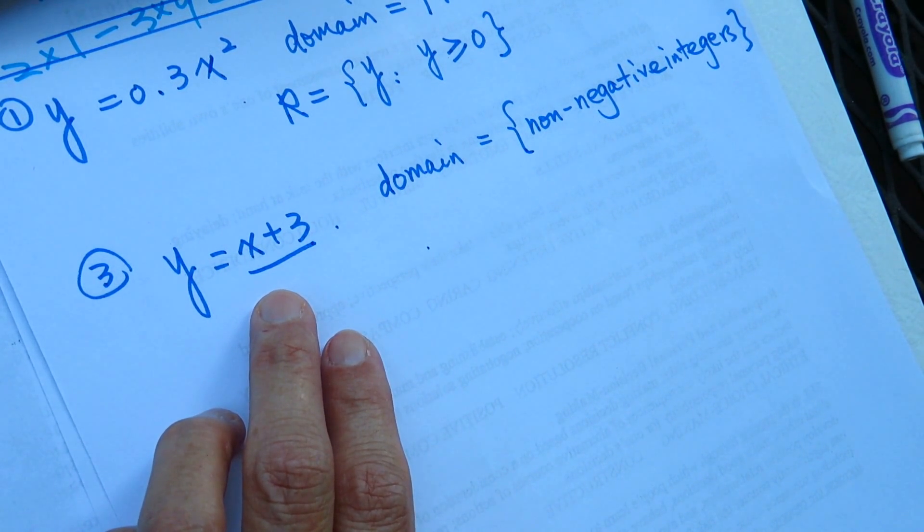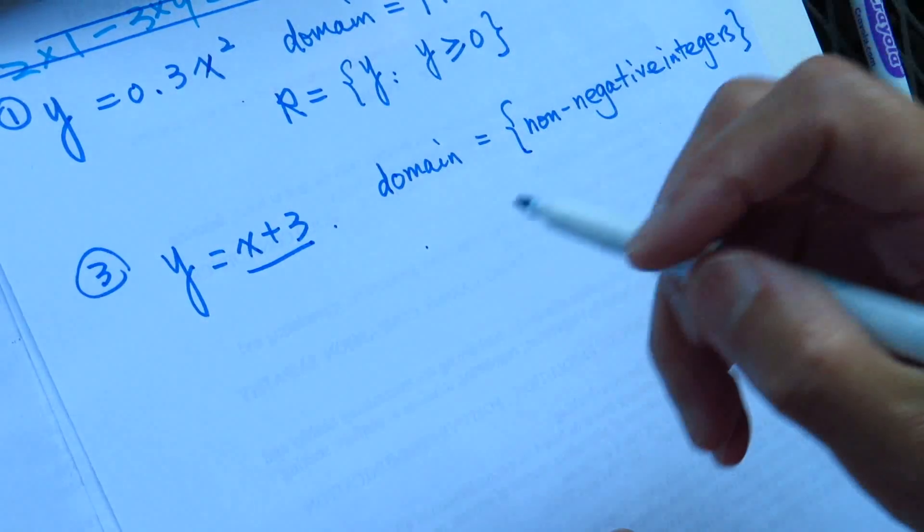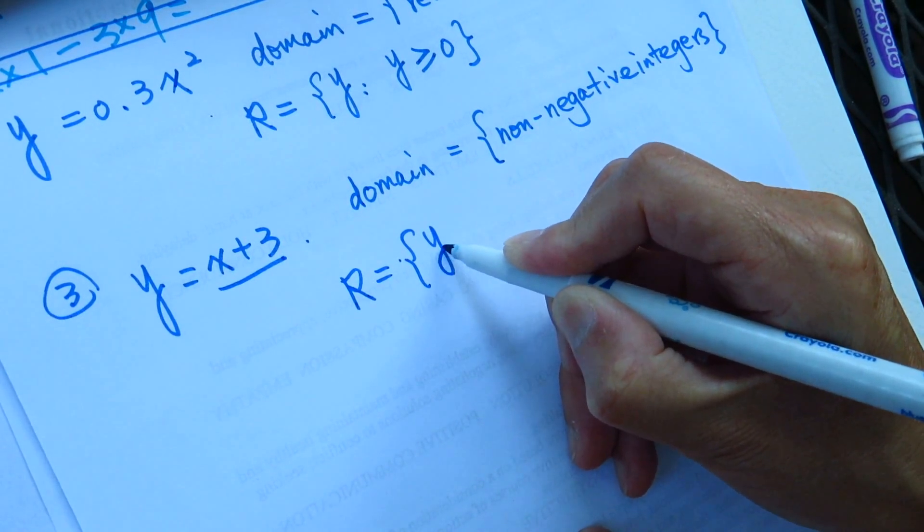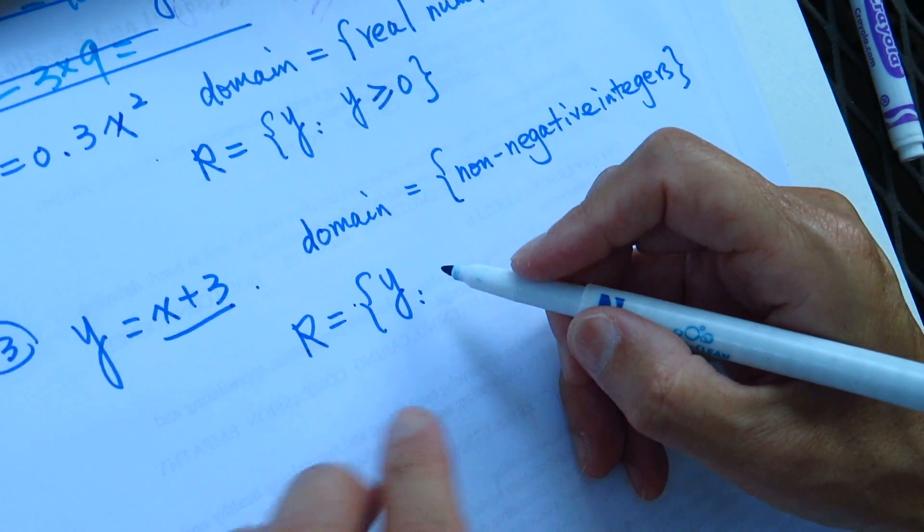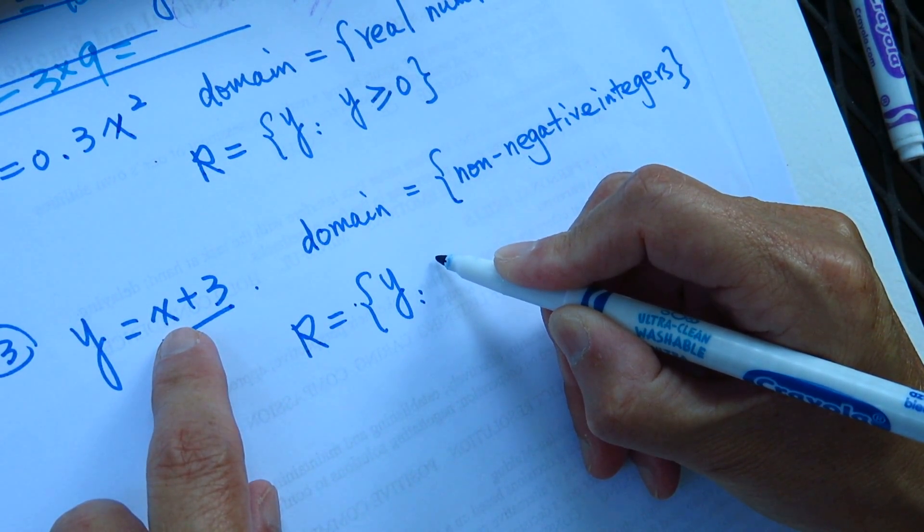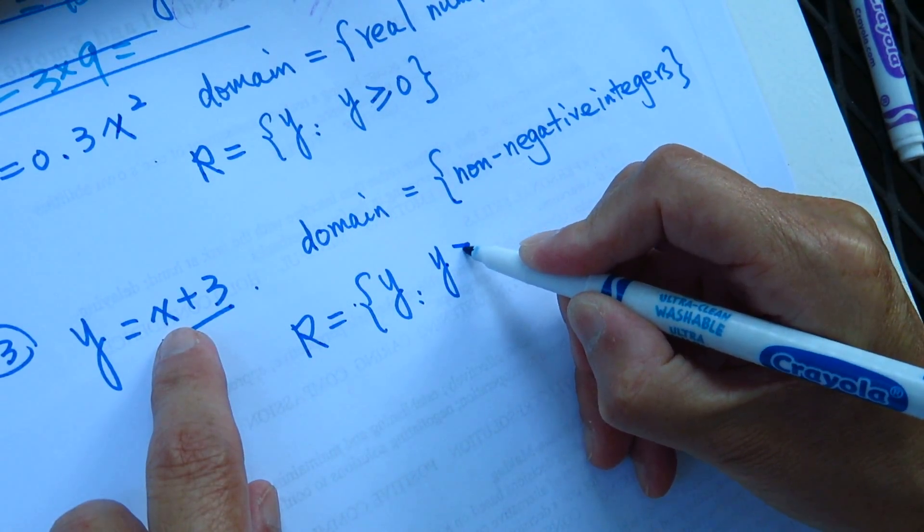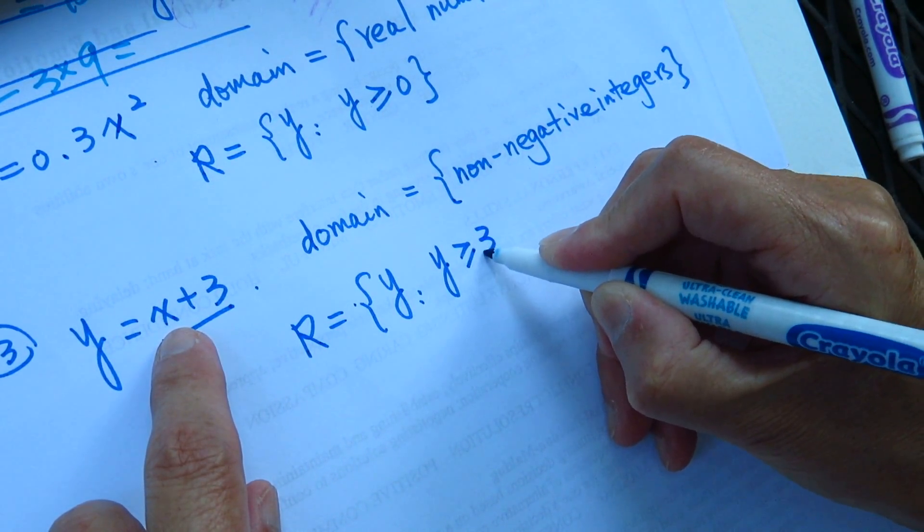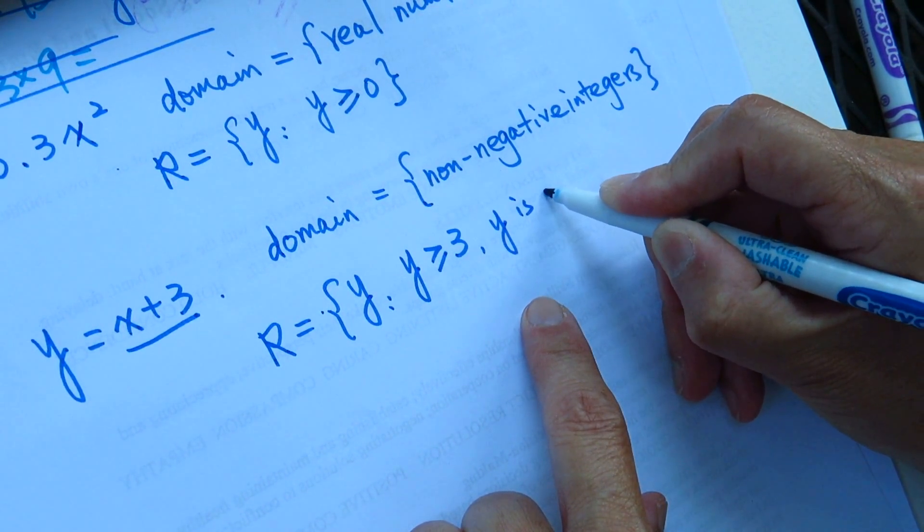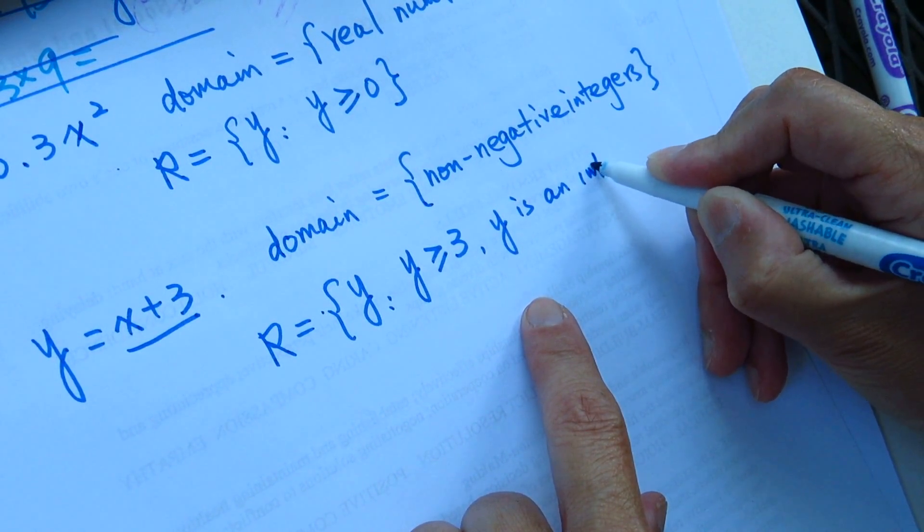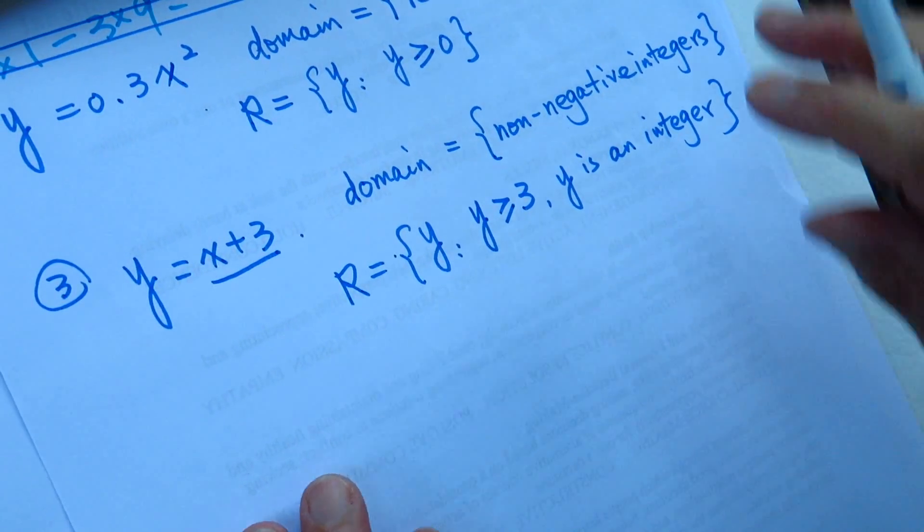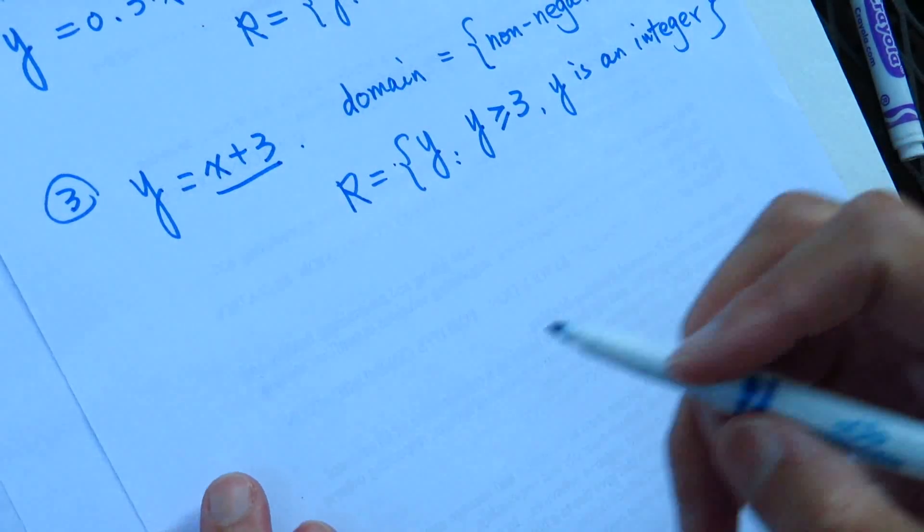And then the range of y will be, the smallest y will be 3, right? So that is the range of question number 3.